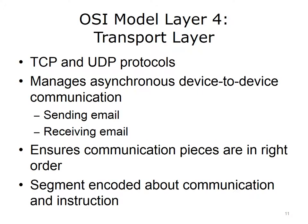OSI model layer 4 is the transport layer. As in the application, presentation, and session layers, no devices operate at layer 4 because this is still where software works on behalf of hardware. The transmission control protocol, or TCP, suite of protocols operates at this layer, as does the user datagram protocol, or UDP. The transport layer manages asynchronous device-to-device communication. When sending an email, services here indicate where a file and the actual communication begin; when receiving an email, the services indicate where a file ends and when the communication process should be considered complete. It also ensures pieces of communication are put in the right order. At the transport layer, the communication is called a segment.